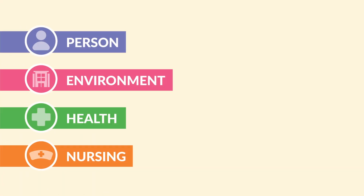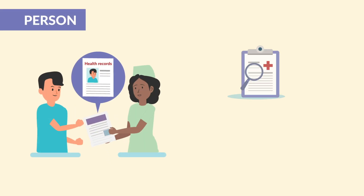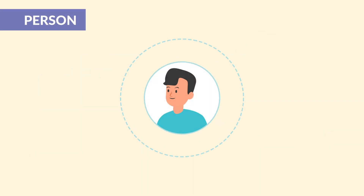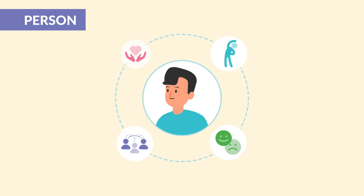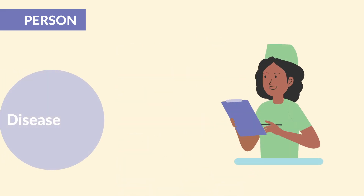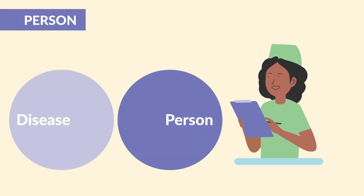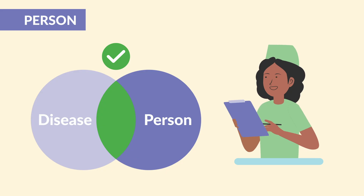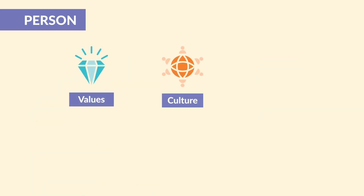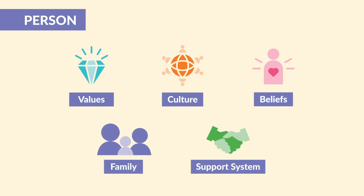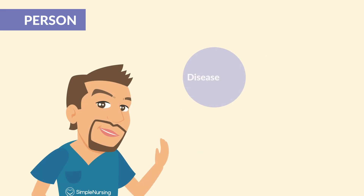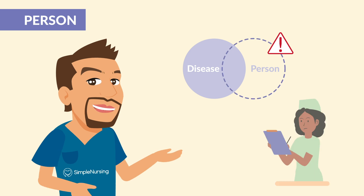First up, let's talk about person. This is your patient — but not just the patient chart, diagnosis, and vital signs. It's the actual person. This concept sees the patient as a whole human being: physical, emotional, social, and even spiritual. It's the idea that we don't treat the disease, we treat the person who's living with the disease. That means respecting values, culture, and beliefs, and involving their family or support system when it matters most. If you only treat the illness, you miss the entire person — and in nursing, that's a big no-no.